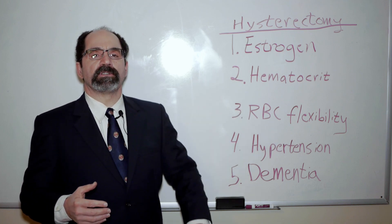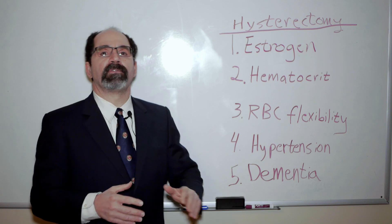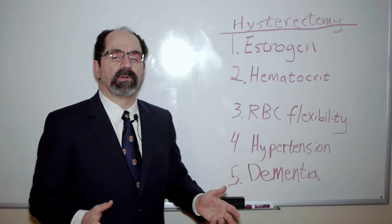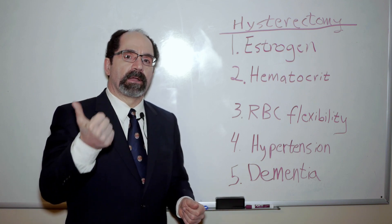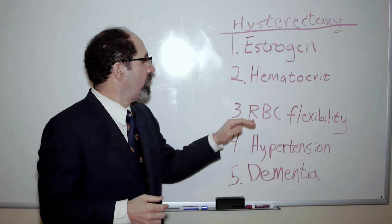So the point I want to make is, every month a woman menstruates, she's lowering her hematocrit, therefore lowering her blood viscosity, therefore lowering her blood pressure, therefore lowering her incidence of atherosclerosis. Atherosclerosis causes myocardial infarctions of the heart, and it also causes strokes.